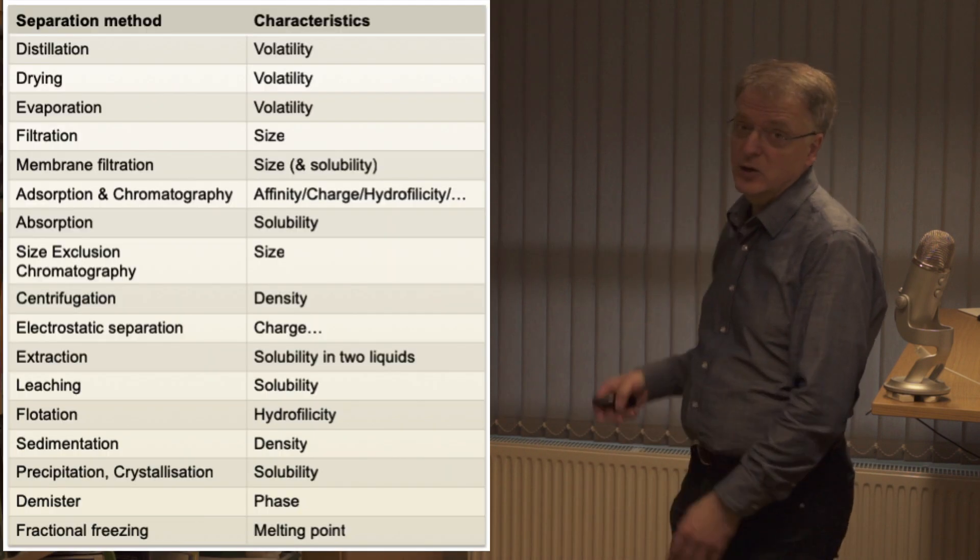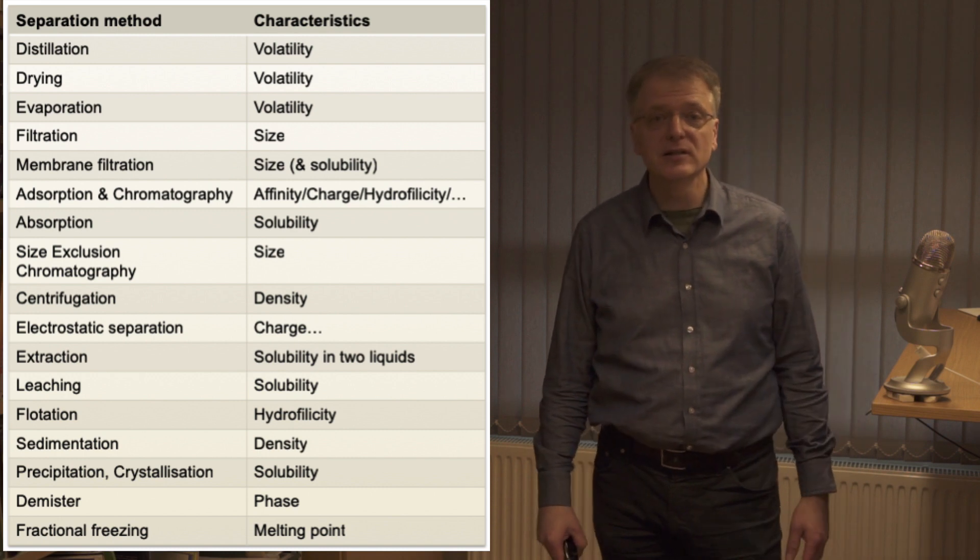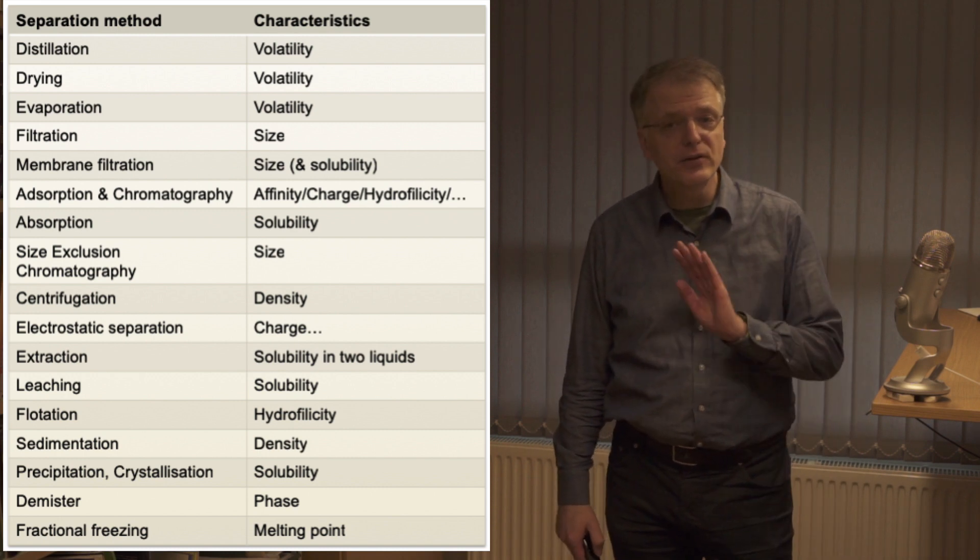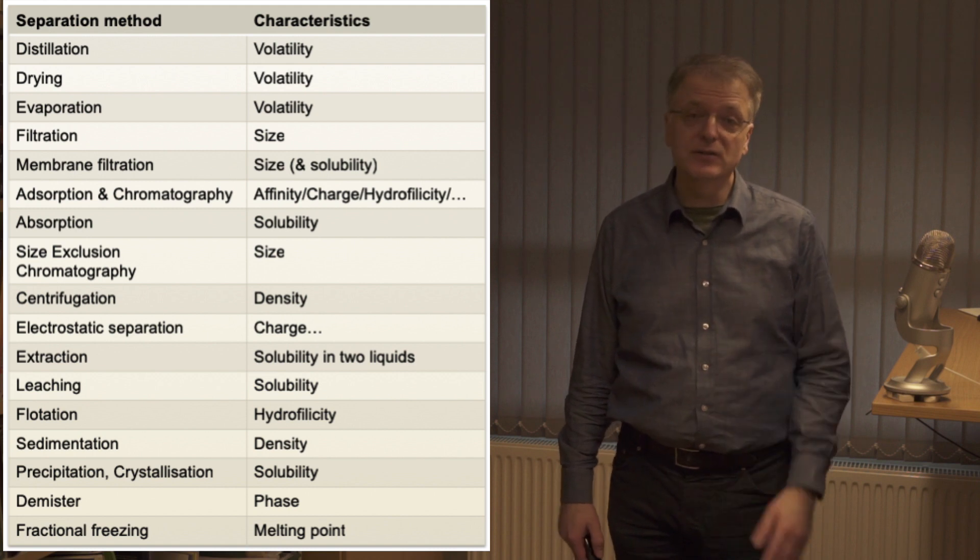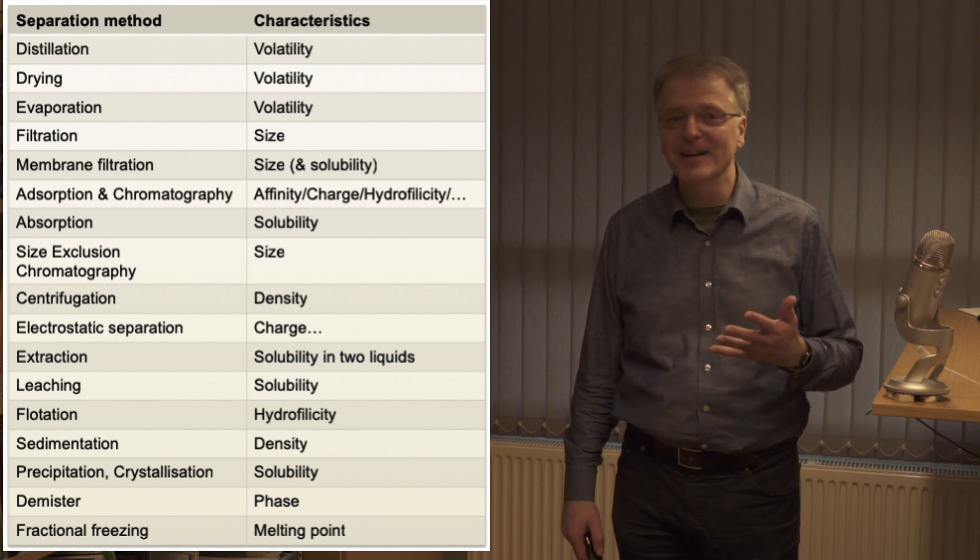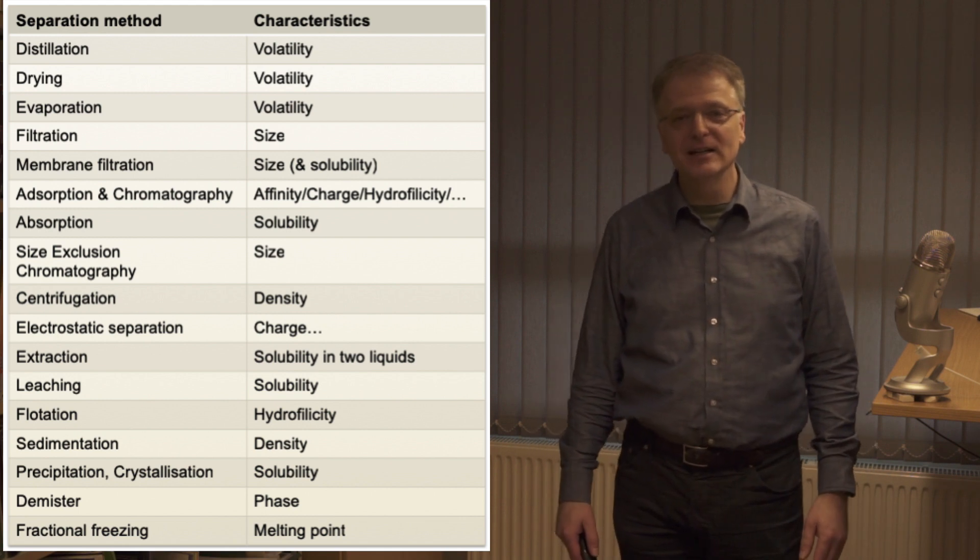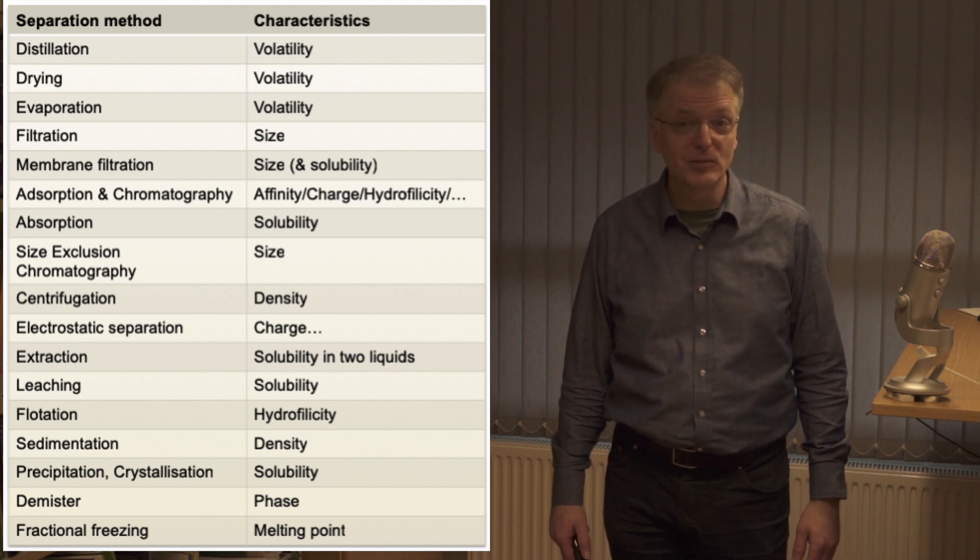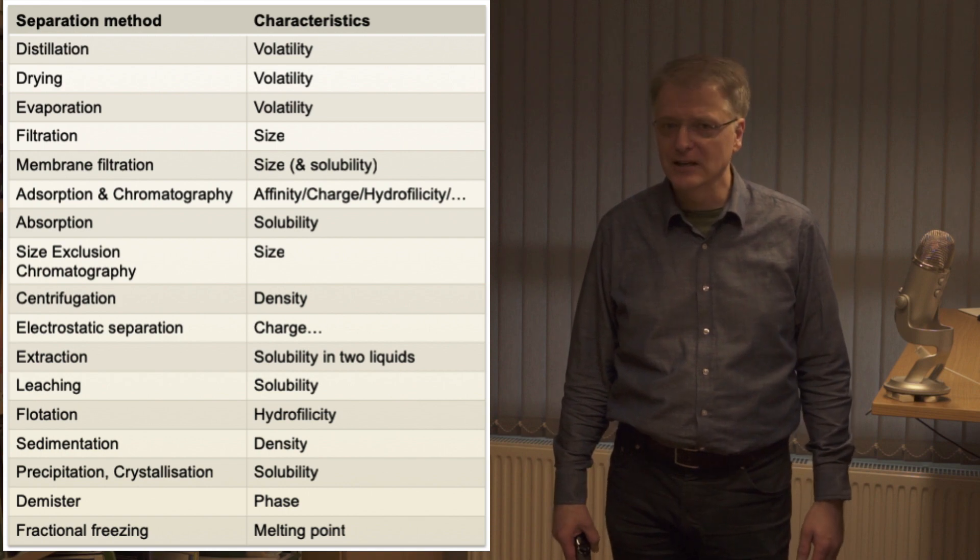And here is an incomplete list of separation methods and physical and chemical characteristics they depend on. Now don't take this list as the absolute truth because there are many variants of separation methods and the exact characteristics they depend on might actually vary. An ugly example of that is chromatography and size exclusion chromatography, which in a sense are two totally different things.